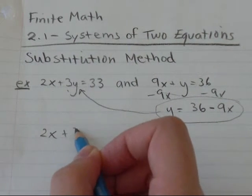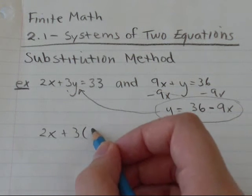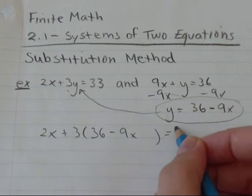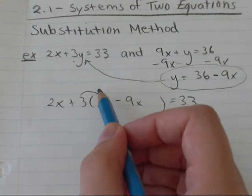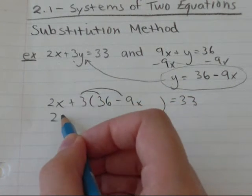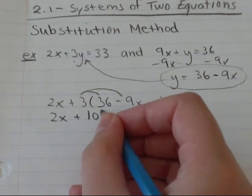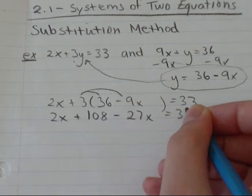I'm going to plug y equals this into the y I have over here. 2x plus 3, we said y equals 36 minus 9x equals 33. So first I'm going to carry in my 3. 2x plus 3 times 36 is 108 minus 27x equals 33.